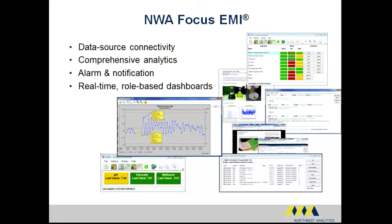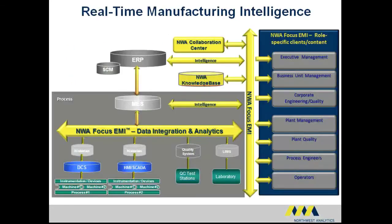NWA's Focus EMI leverages real-time analytics to monitor key process parameters and quality indicators, while helping identify opportunities for process improvement. The software connects directly to existing data sources, creating a layer of analytics without copying the data into a separate database. Dashboards access the analytics layer to track changes in the plant's processes and product quality, to provide real-time statistical alarming and visibility.